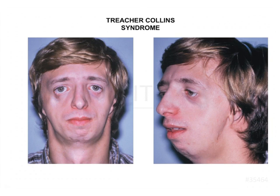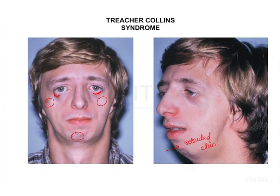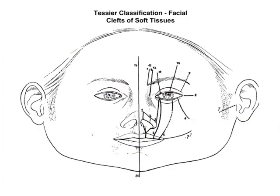For Treacher-Collins syndrome, the most important features are the anti-mongoloid slant, coloboma of the lateral lower eyelid, absence of malar prominence, hypoplasia of the mandible resulting in a retruded chin appearance, and poorly defined ears. Correlating these features with the clinical picture confirms that the given case favors Treacher-Collins syndrome — mandibulofacial dysostosis.